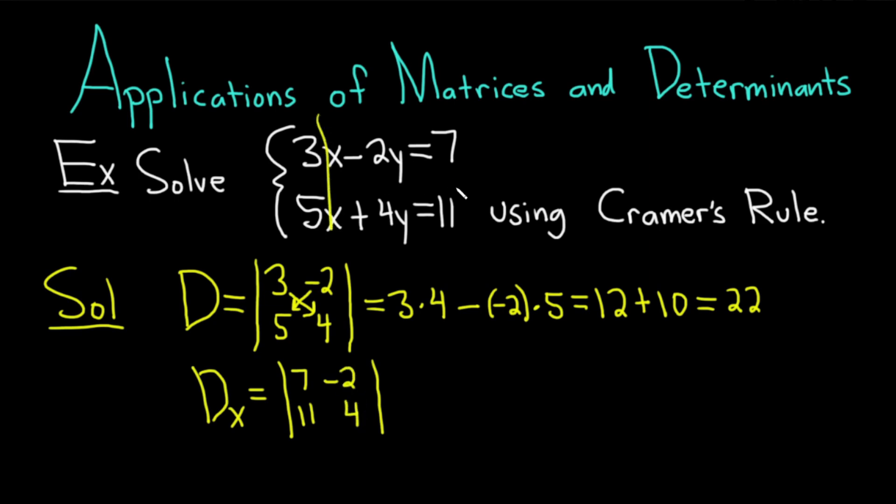Again, you cross out the x's and then replace them with the 7 and the 11. We've done that here. And then you keep the coefficients on the y's, negative 2 and 4. It's equal to 7 times 4 minus, and then negative 2 times 11. Which is equal to 28. And then there's a double negative, so we get 2 times 11, which is 22. We end up with 50.